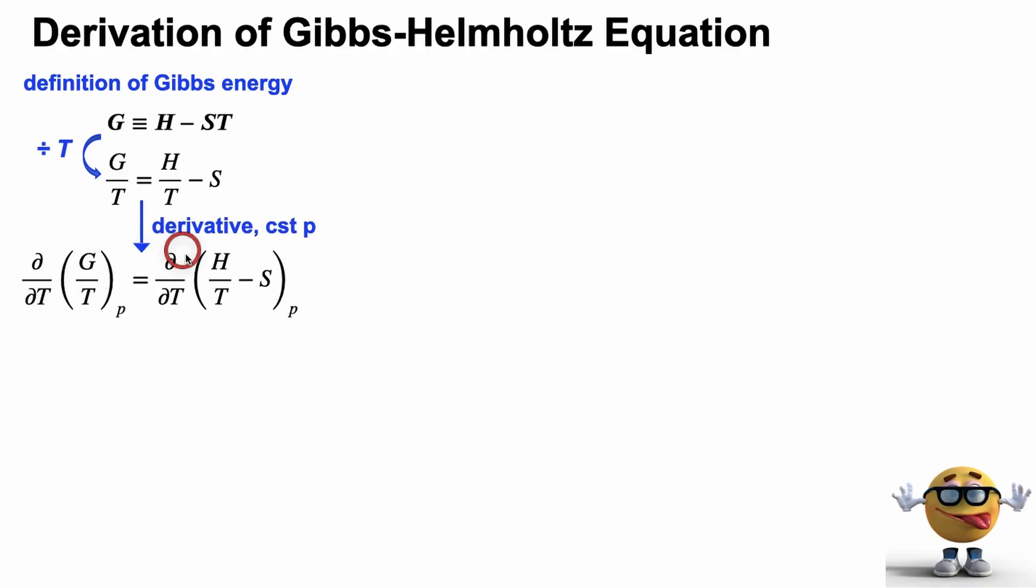And this is the derivative of G over T, and then we're taking the derivative of the left and right hand side. Now what we're going to do here is we're just going to rearrange. So this is the derivative of G over T, and then we're going to expand this derivative into the brackets. So we're taking the derivative with respect to T of each term in here.